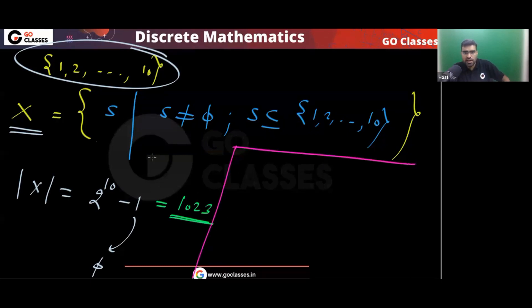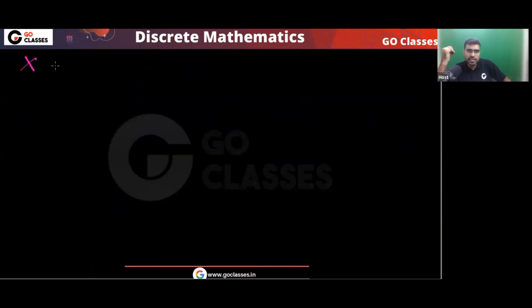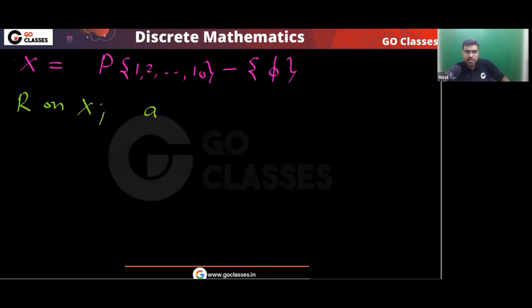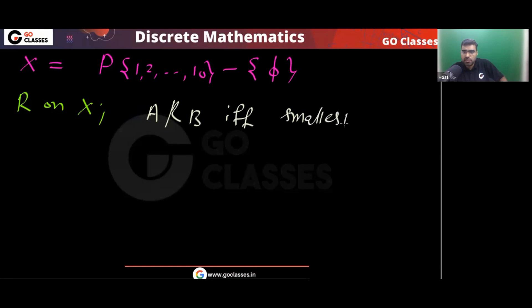We define relation R on set X. X equals the power set of {1,...,10} minus the empty set. We say A is related to B if and only if the smallest element in A equals the smallest element in B.